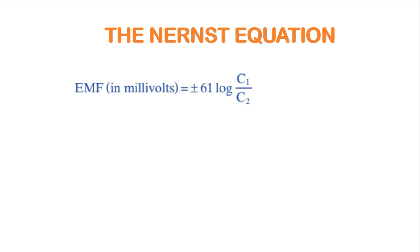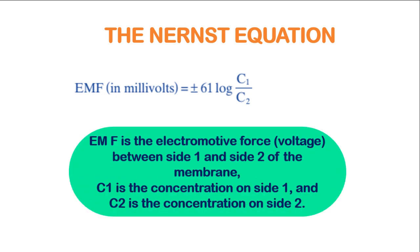What is the Nernst equation? The EMF equals positive or negative 61 log C1 over C2. The electromotive force is in millivolts and is the voltage between side 1 and side 2 of the membrane. C1 is the concentration on side 1 and C2 is the concentration on side 2 of the membrane.